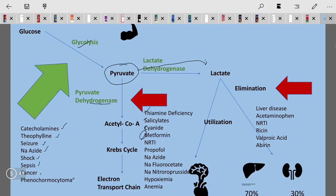NRTIs, antiretroviral drugs, propofol, a commonly used sedative and induction agent, sodium azide—sodium azide increases glycolysis and also inhibits pyruvate dehydrogenase—sodium fluoroacetate, sodium nitroprusside, hypoxemia, and anemia. In all these conditions pyruvate dehydrogenase will be inhibited.